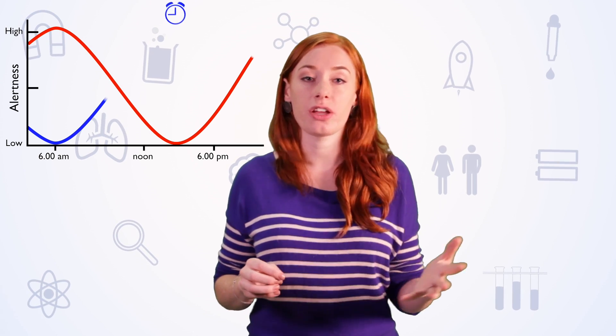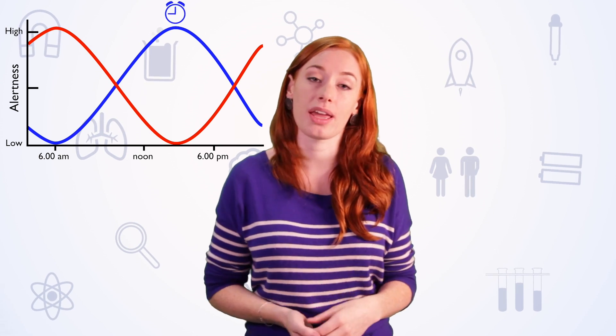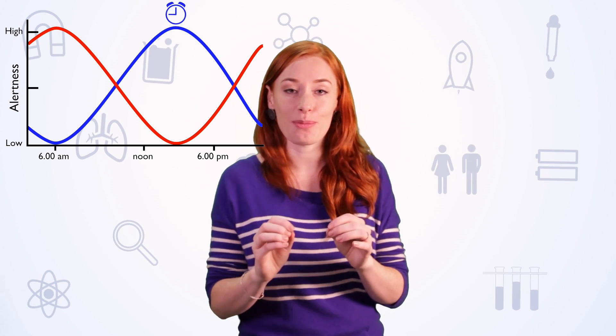The circadian cycle also explains why it's hard to get a full eight hours sleep if you pull an all-nighter. So your melatonin levels might be quite high when you finally go to bed at five or six o'clock in the morning, but your natural cycle is going to be there to screw you over around lunchtime, robbing you of your well-earned kip.